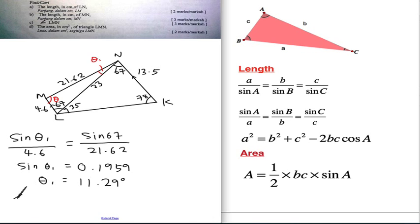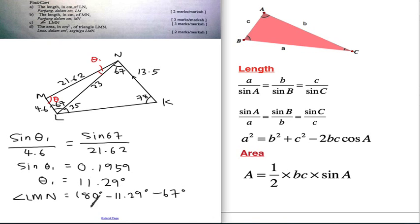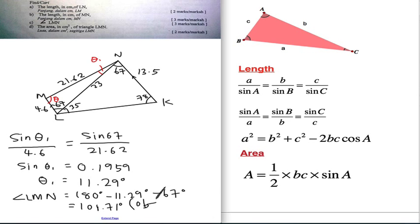Now we can find angle LMN. Since one triangle sums to 180 degrees: 180 minus 11.29 minus 67 gives 101.71 degrees. You always need to check — this angle is bigger than 90 and less than 180, confirming it is indeed the obtuse angle.